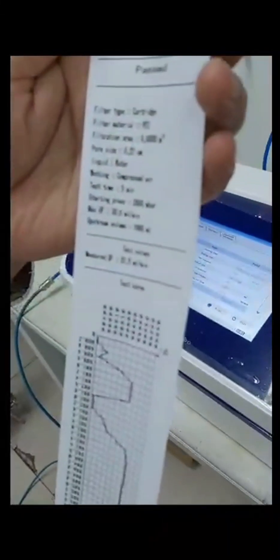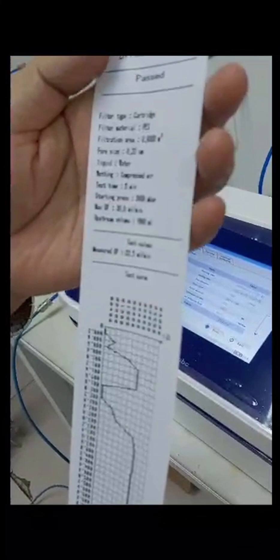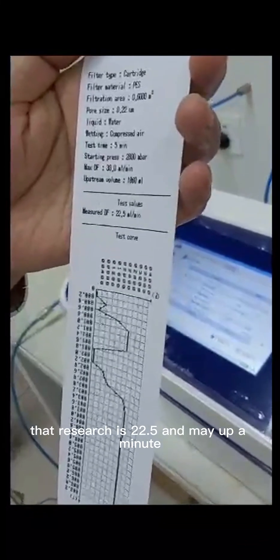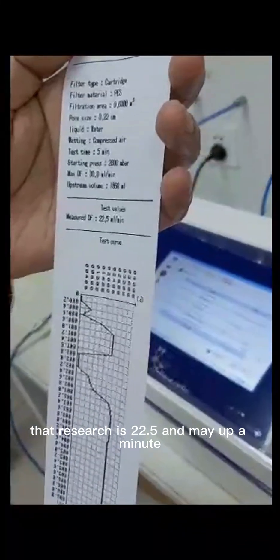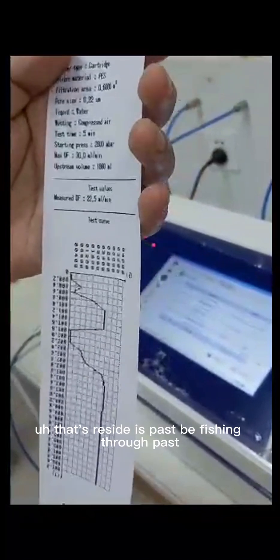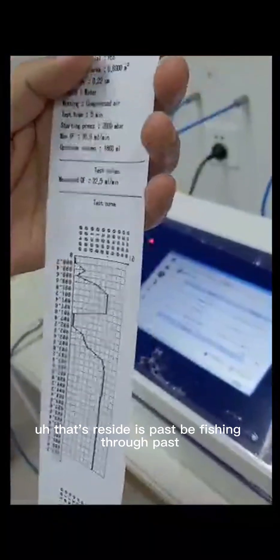You can see the test result. Diffusion fluid is 22.5 ml per minute. Test result is passed. Diffusion fluid is passed.